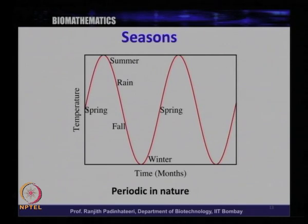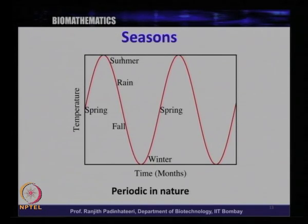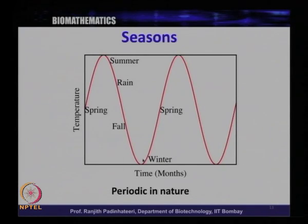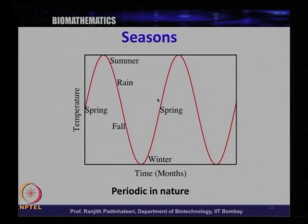In August, the temperature decreases further, and at winter — around January — you have the minimum temperature, and again the temperature increases. This graph essentially represents temperature over seasons and you get the idea of periodicity — this is periodic in nature.